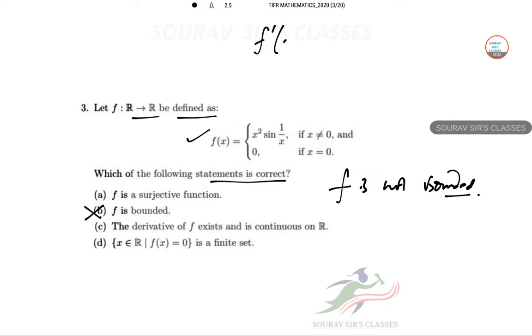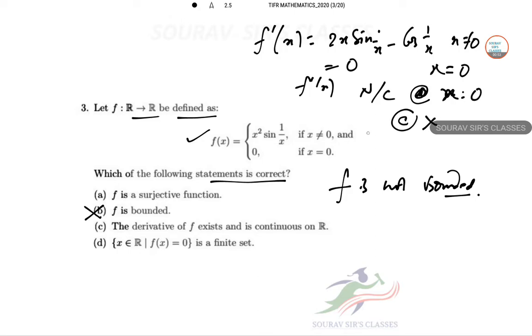Now, if we do F dash x then this is 2x sine 1 by x minus cos of 1 by x. This is when x not equal to 0 and this is 0 when x equal to 0. So F dash x is non-continuous at x equal to 0. So that means option C is also wrong.